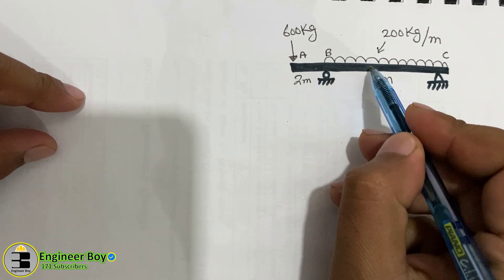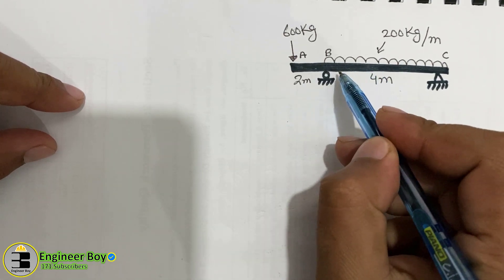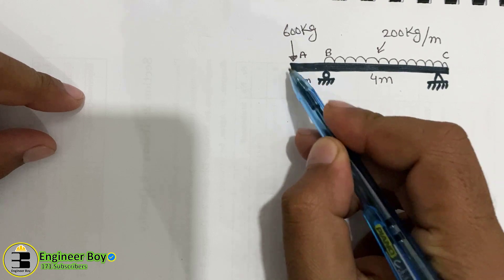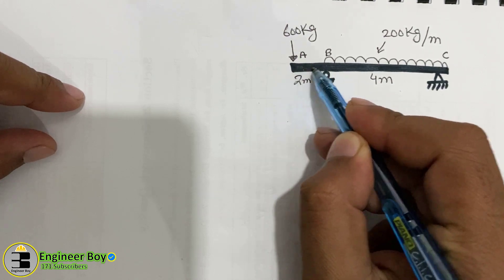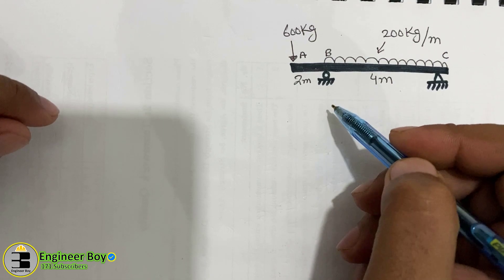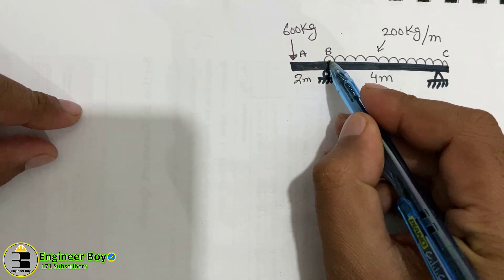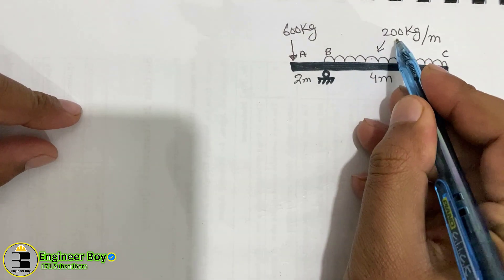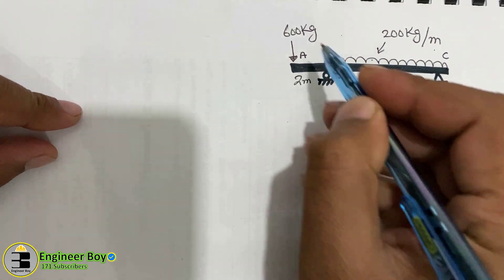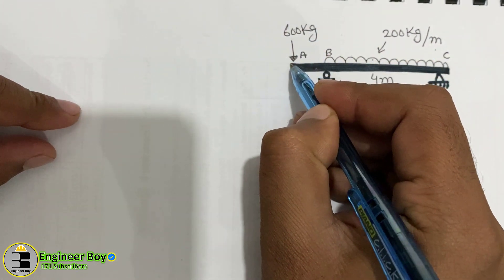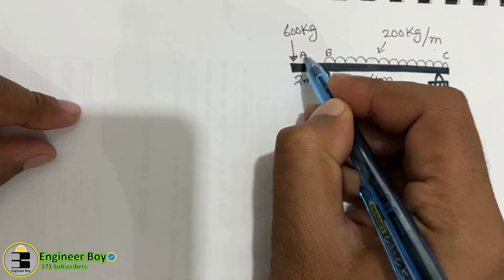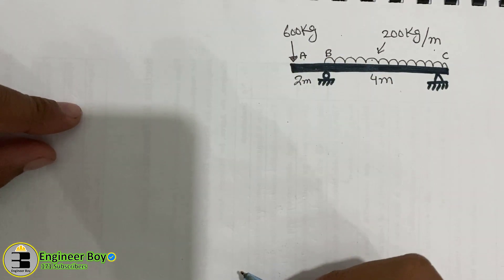We have a single overhanging beam — it overhangs on the left-hand side once, so we call it a single overhang beam. There is a UDL of 200 kg per meter over a span of 4 meters, and a point load of 600 kg at point A at the end.